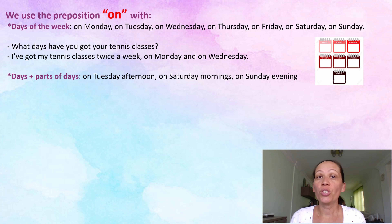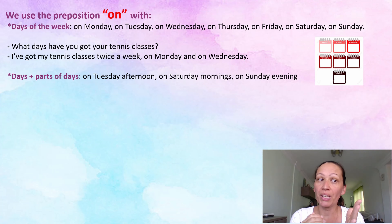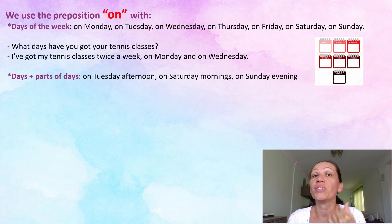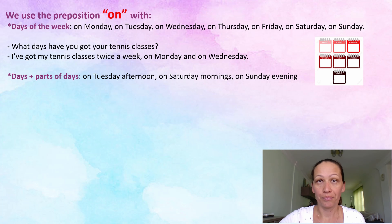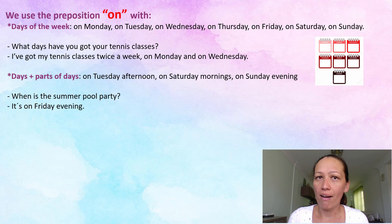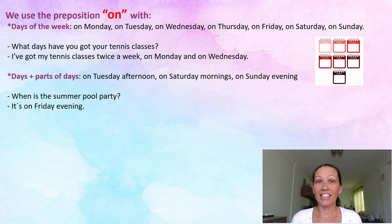We also use the preposition 'on' with days of the week combined with a time of day. For example: on Tuesday afternoon, on Saturday morning, on Sunday evening. When is the summer pool party? It's on Friday evening.